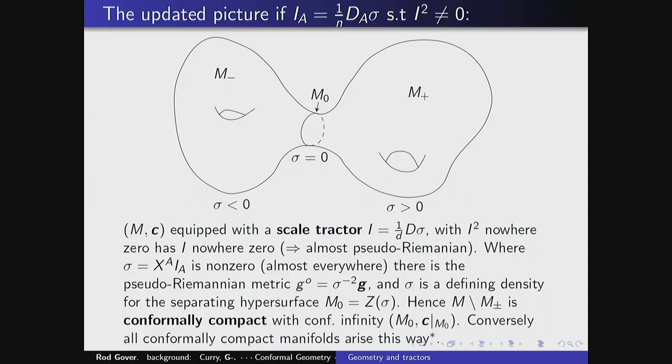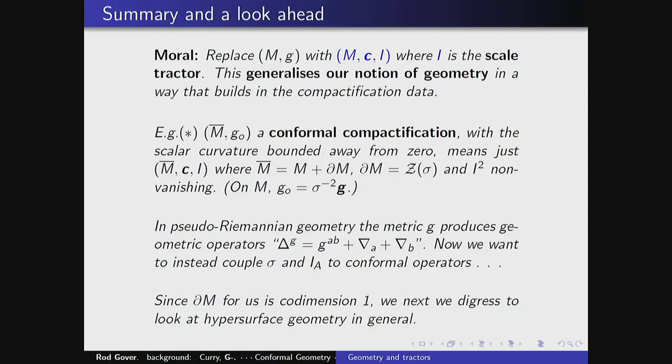A sort of different way of thinking about geometry: we can replace thinking of just a Riemannian manifold with thinking of a conformal manifold equipped with one of these scale tractors. That includes usual Riemannian or pseudo-Riemannian geometry, but you mainly gain something when there's a zero locus for the top slot of the scale tractor — I = (σ, ∇σ, −Δσ + Jσ). This is going to help us learn how the geometry on the zero locus is linked to the geometry on the bulk. So we can think of conformal compactification as a manifold with boundary, with the boundary being the zero locus of σ and I² non-vanishing.